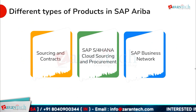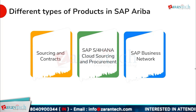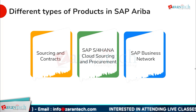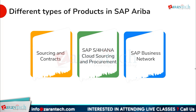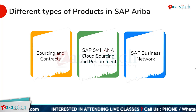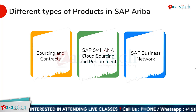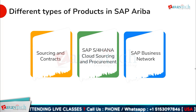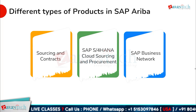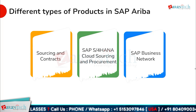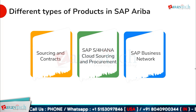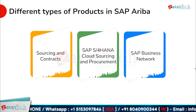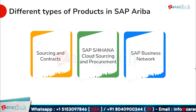SAP Ariba offers several different types of products catering to different aspects of procurement and supply chain management. SAP Ariba Sourcing and Contracts enables businesses to find and select the best suppliers, as well as create and manage contracts with them. SAP S/4HANA Cloud Sourcing and Procurement integrates SAP Ariba with SAP S/4HANA, providing a seamless procurement experience. And finally, SAP Business Network connects businesses with a vast network of suppliers, enabling them to find new partners and expand their reach.